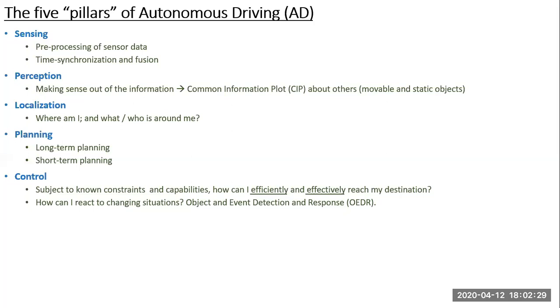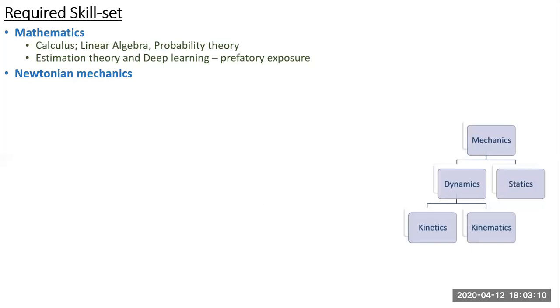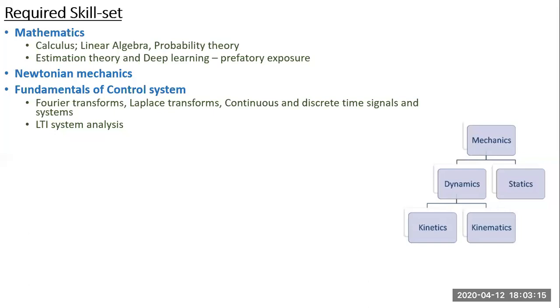This is the required skill set. You need a very strong background in calculus, linear algebra, probability theory, estimation theory, and deep learning — at least a prefatory exposure to know what these things do. You should also know Newtonian mechanics, and the fundamentals of control systems: Fourier transforms, Laplace transforms, continuous and discrete time signals and systems, and linear time-invariant system analysis should be very clear to you.